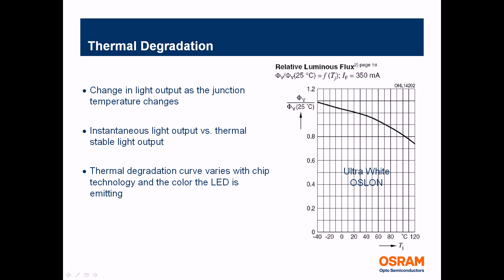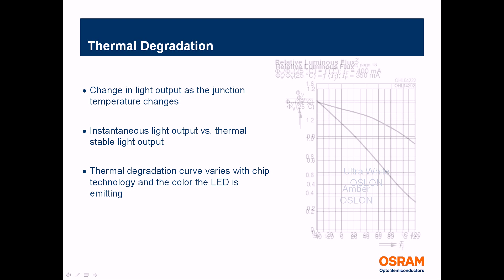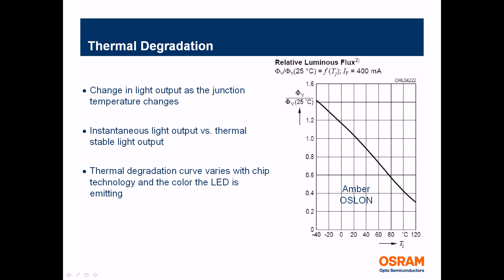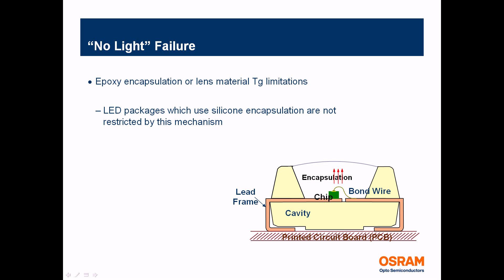Looking at thermal degradation, there's a change in relative light output from the device depending on temperature. LEDs are usually measured at what's called instantaneous light output — a measurement taken at 25 degrees C. However, in actual applications the junction temperature is often much higher than 25 degrees C, so that needs to be compensated for. These curves are found in LED manufacturer data sheets, and they differ for each device and color, so you should look up the specific device and its thermal degradation curve during your design.